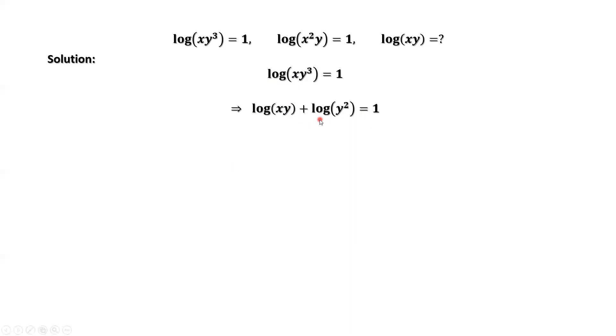Use the log function property again. The power inside of the log function is 2. We can take this 2 outside in front of the log function, which is this equation. This is our first result. Log of x times y plus 2 log of y equals 1.